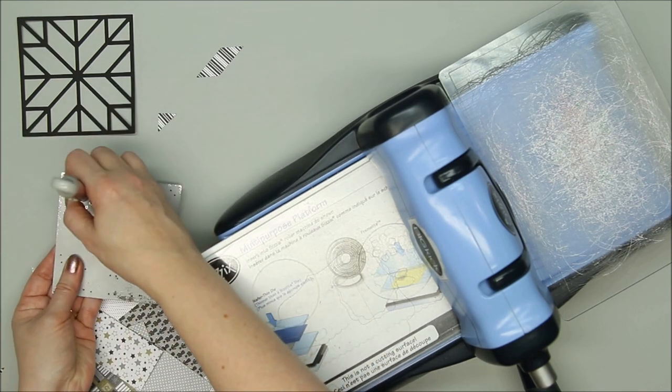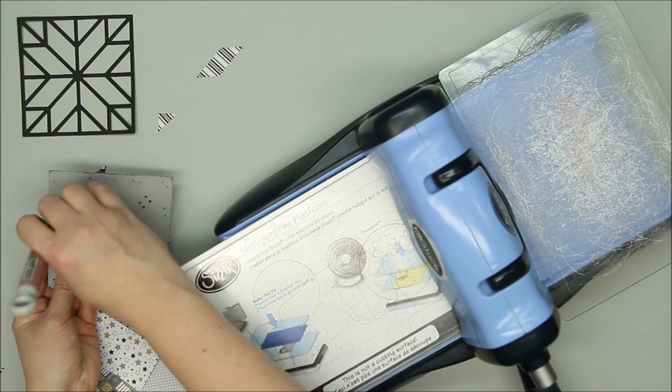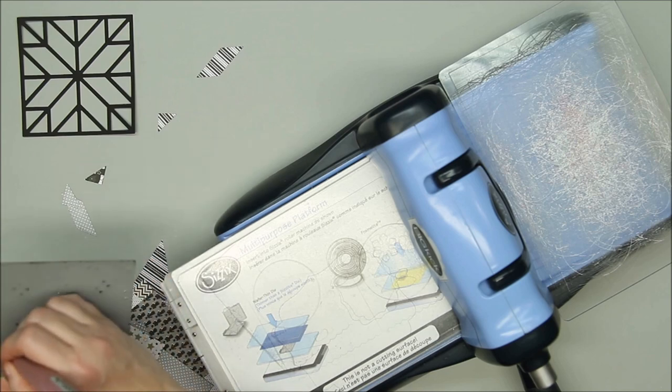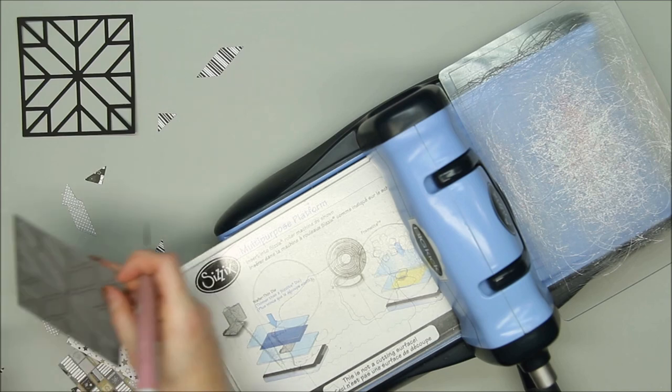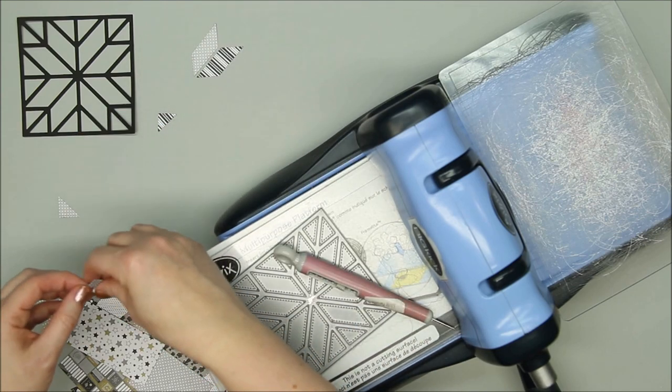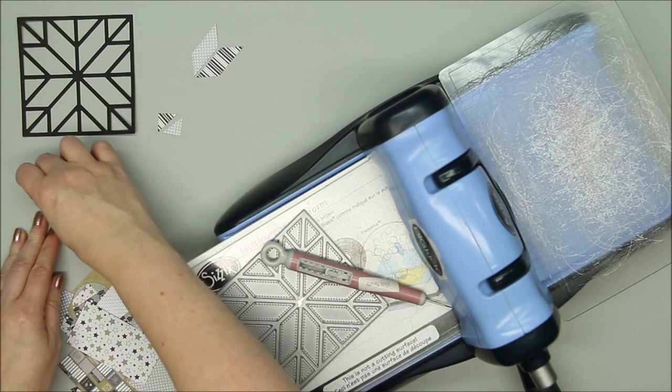Remember, you will be cutting the pieces in reverse. I use a craft pick or paper piercer to help remove the die cut pieces from the metal die. I've probably used this quilt die hundreds of times, so the paper really gets stuck in mine.